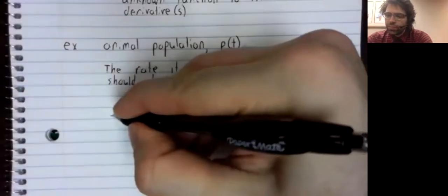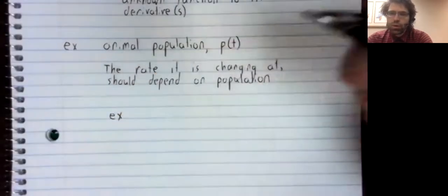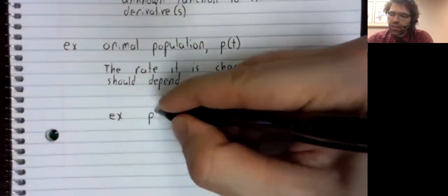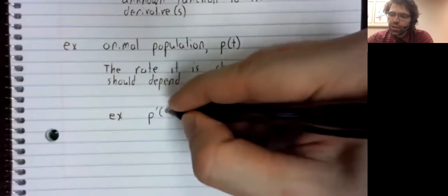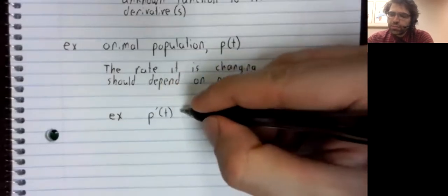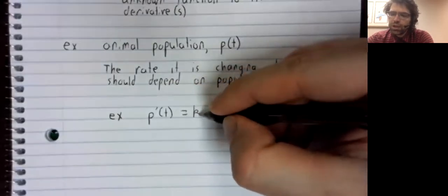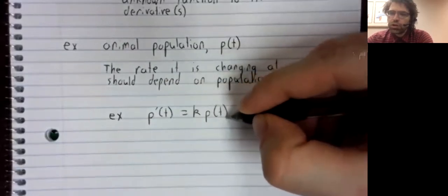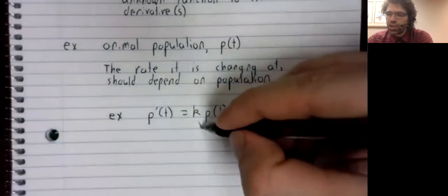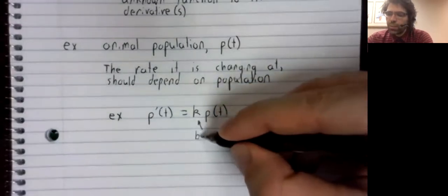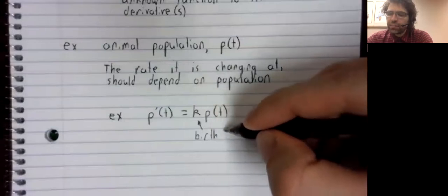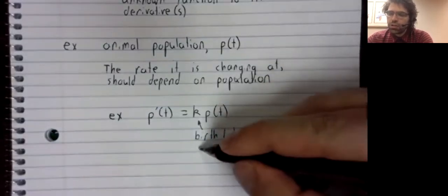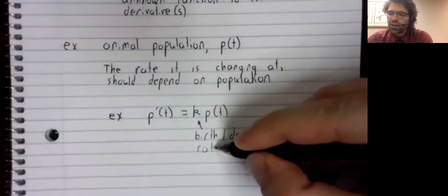So a simple form that this equation might take would be something like this: the derivative is some constant k times the current population, where this k is either a birth or a death rate.